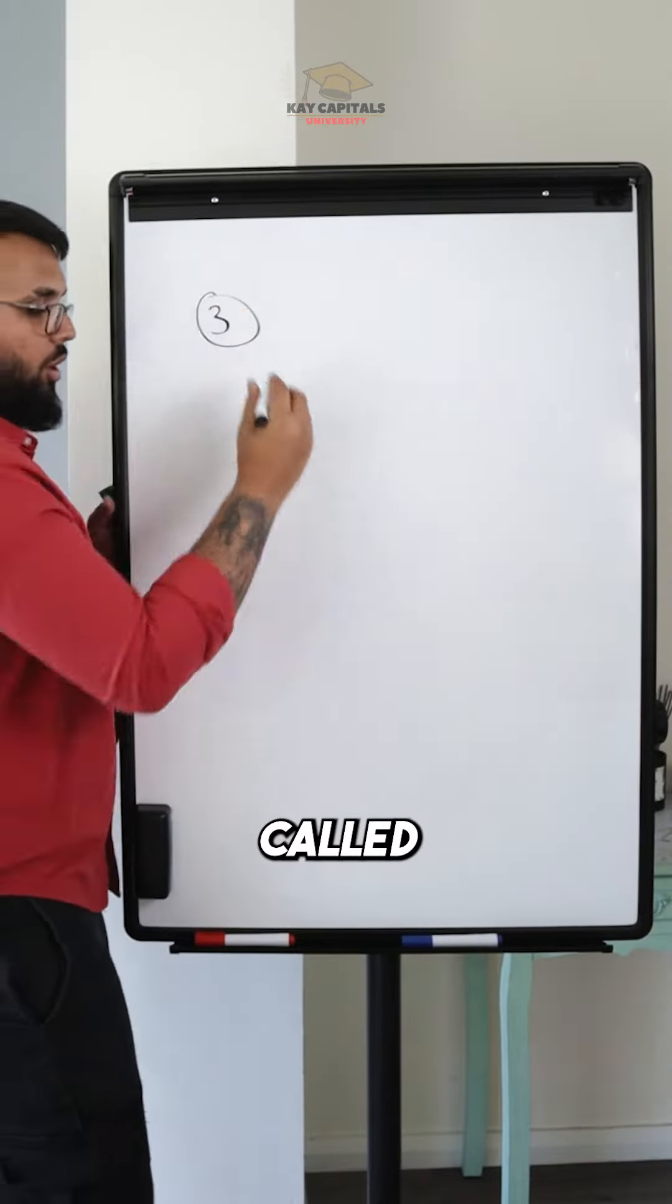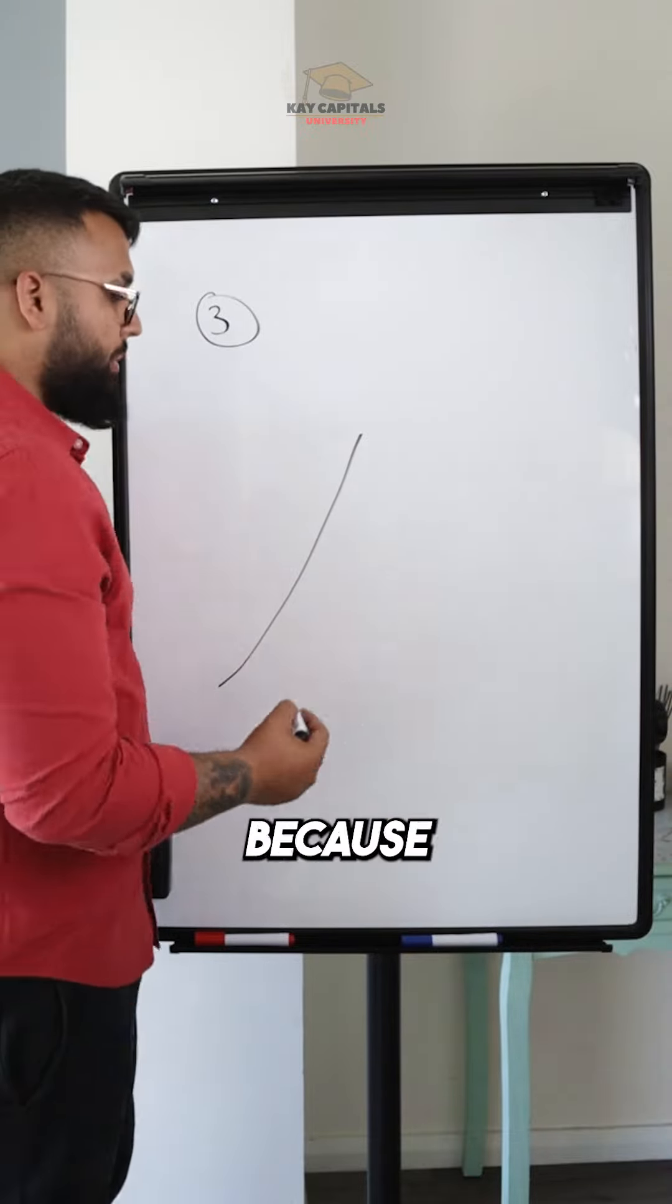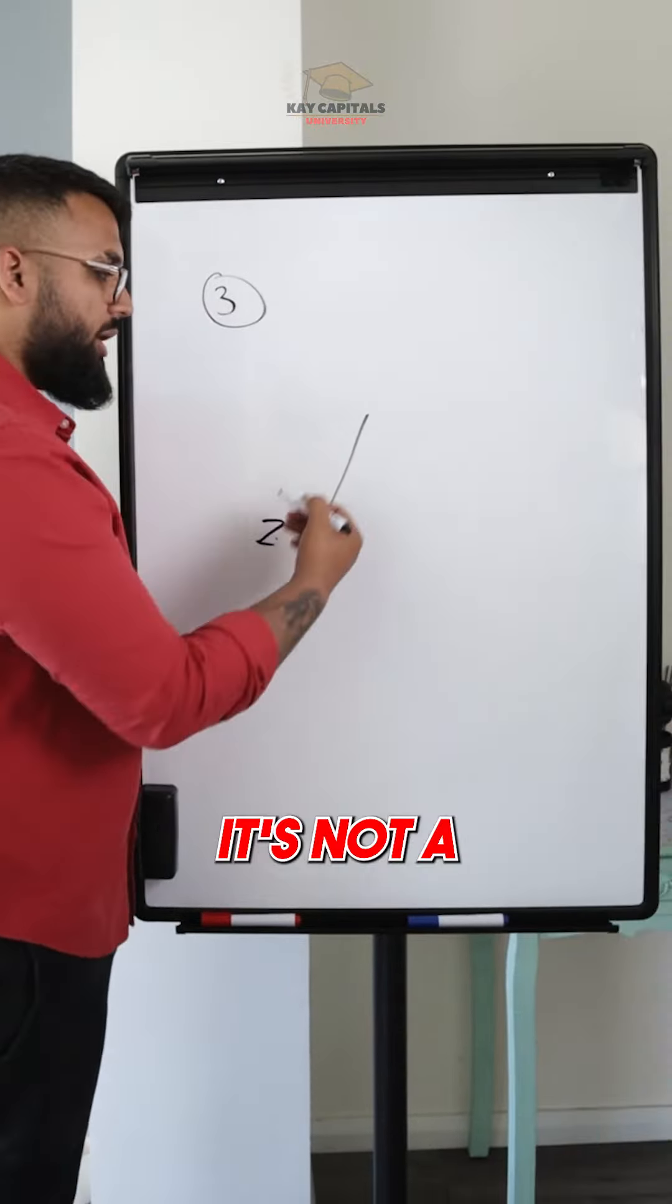There's a third one which you cannot trade, which is called simply an impulse. Have you ever seen a stock moving up but you're getting FOMO? It's usually because it's just an impulse. Now you can't trade it. Why? Because it's not a complete setup yet.